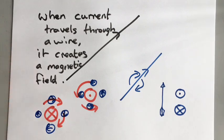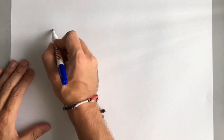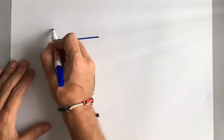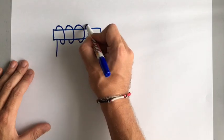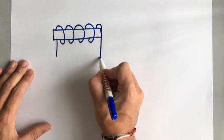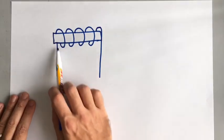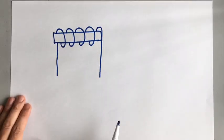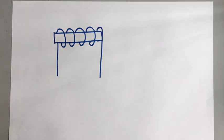Remember, all wires when they're carrying current create magnetic fields. We can go a step further and look at a coil of wire. If we take a coil of wire — quite difficult to draw in two dimensions — with an iron core in the middle, the wire goes round and round. The shape of the magnetic field created by a coil of wire is exactly the same as a bar magnet — the type with the red and blue ends we looked at in the last video.